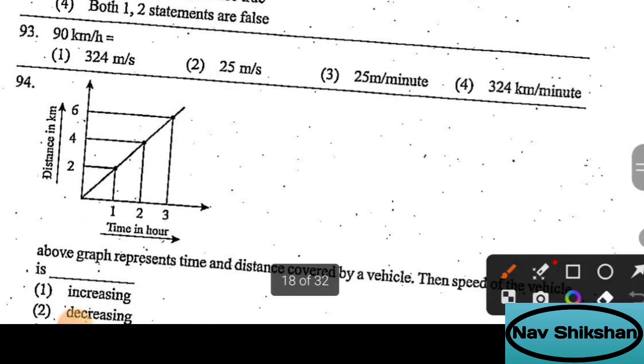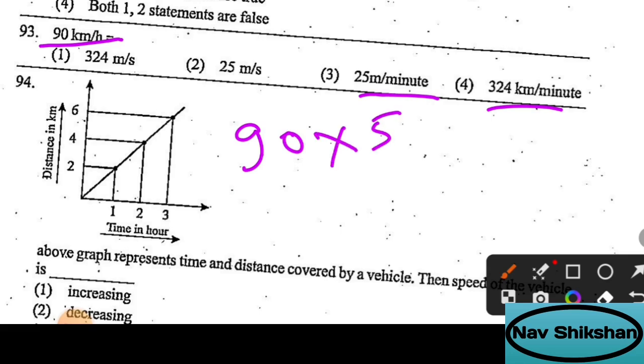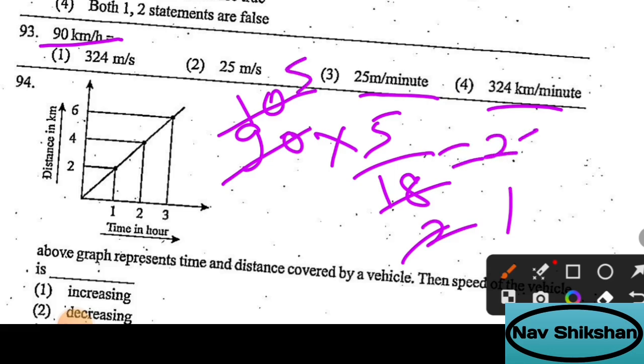Here you have to convert 90 km/h to meter per second. When we convert kilometer per hour to meter per second, we multiply by 5/18. This is 90 divided by 18, which is 5, times 5, which equals 25 meter per second. So here the right answer is option number 2.